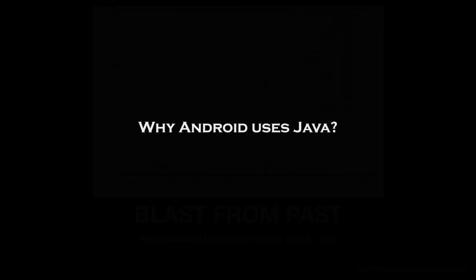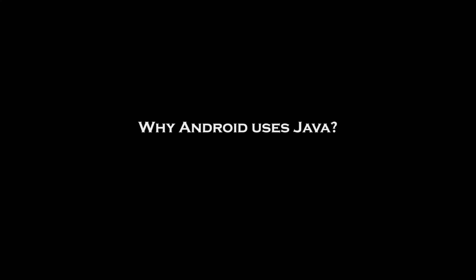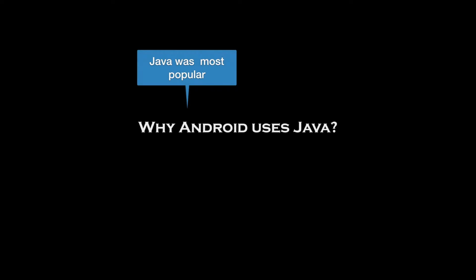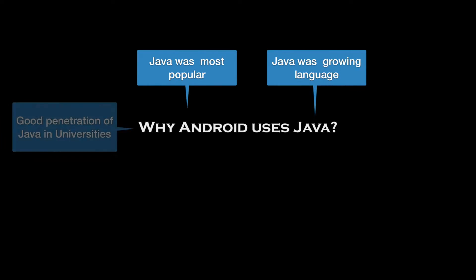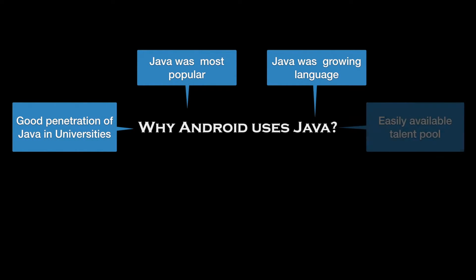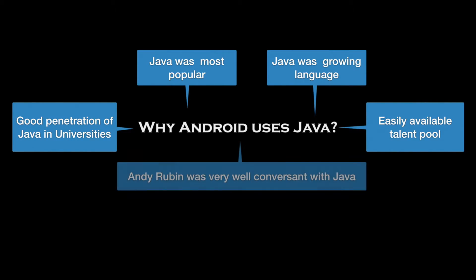So now if we go back to the question of why Android uses Java: Java was the most popular language during the times when Android was in its very nascent stages, it was a growing language, and it had good penetration in most universities. This would mean that over a period of time there would be an easily available talent pool of Java professionals in the market.